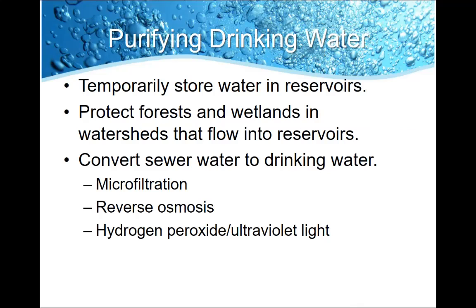The last thing to discuss is purifying our drinking water. We tend to store water in reservoirs temporarily, but to keep it clean we need to protect our forests and wetlands — those watersheds are where water goes first before reaching the reservoir, and plant root systems help clean the water naturally. This can even convert sewer water into drinking water. We also have man-made processes like microfiltration and reverse osmosis — the same type of membrane process we saw when looking at desalination — as well as hydrogen peroxide and UV light, which can help clean drinking water.